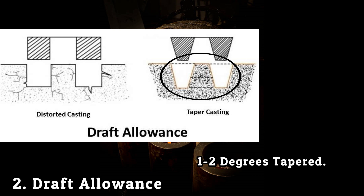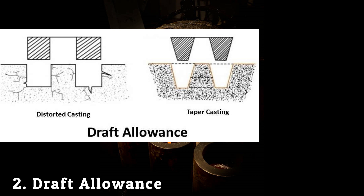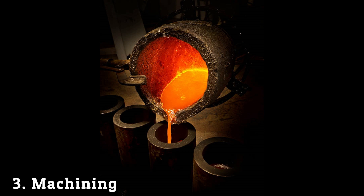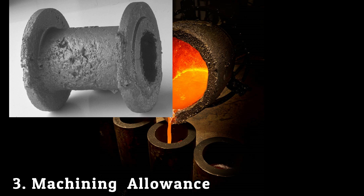This allows easy removal of the pattern from the mold and does not affect the actual dimensions of the casting. These are known as draft allowance. As we know, casting gives poor surface finish and rough surfaces.